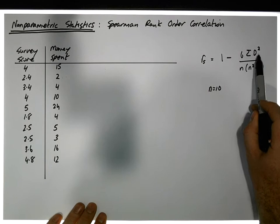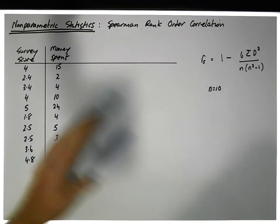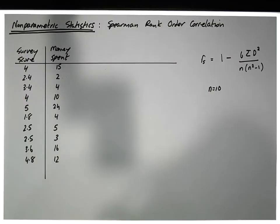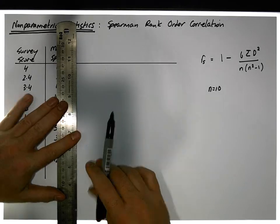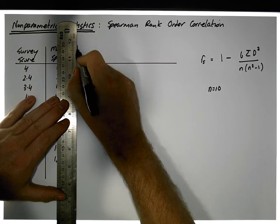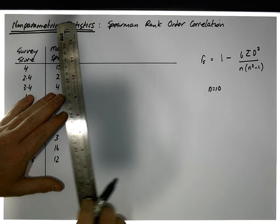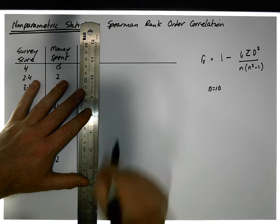So what is this d squared? Well, it's the difference between the rankings of these particular observations. So what we do is we need to create a set of ranks. In other words, for each variable we need to rank the observations within that variable relative to each other.